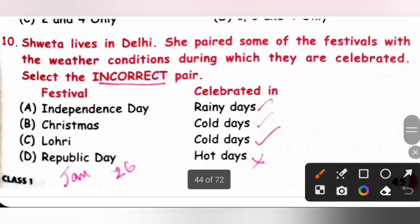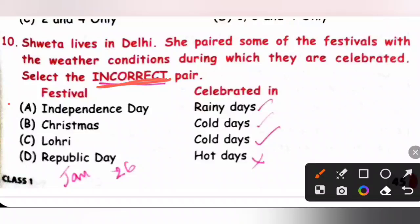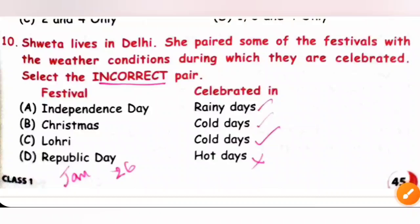Question 10: Shweta lives in Delhi and paired festivals with weather. Select the incorrect pair. Independence Day on 15th August — rainy days: correct. Christmas on 25th December — cold days: correct. Lohri in January — cold days: correct. Republic Day on 26th January — January is a winter month with cold days, so this is the incorrect pair as stated. Option D is the correct answer.